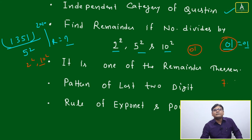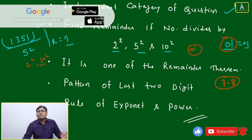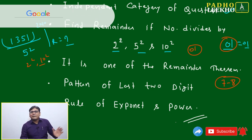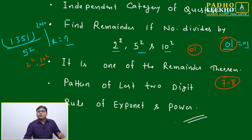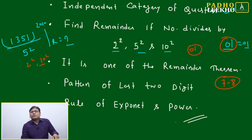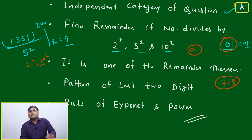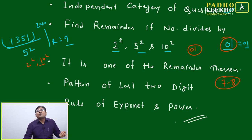There are 7 to 8 remainder theorems: basic remainder theorem, Chinese remainder theorem (CRT), constant remainder theorem, pattern method, last two digit method, Fermat's theorem, reverse of Fermat's theorem, and some special methods. Understanding divisibility patterns and remainder theorems gives you the gist of how numbers work. CRT is especially important — not just for numbers, but also for algebra.